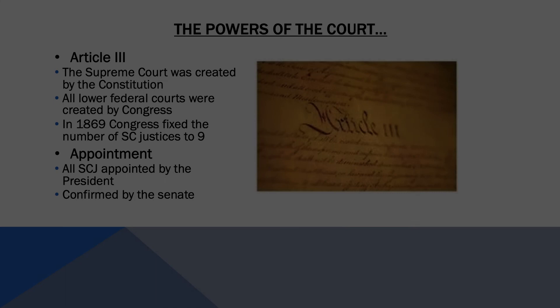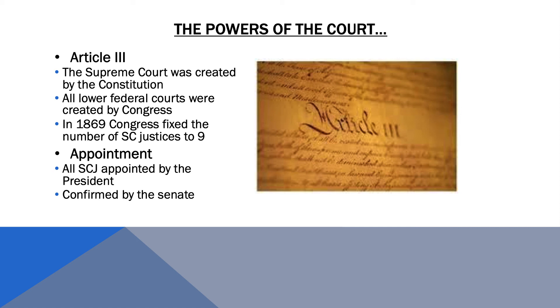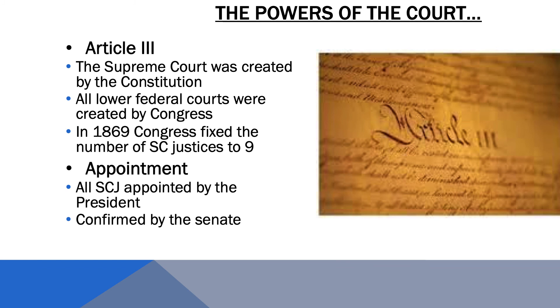While we're on the topic of constitutional power, let's talk about which powers are expressly granted to the courts via the Constitution. Article 3 of the United States Constitution spells out the structure, responsibilities, and qualifications of the last branch of government, the judiciary. Article 3 only creates the Supreme Court of the United States but leaves the power to create all lower-level federal courts to Congress. Article 2 allows the president to fill vacancies on the Supreme Court with the advice and consent of the Senate.